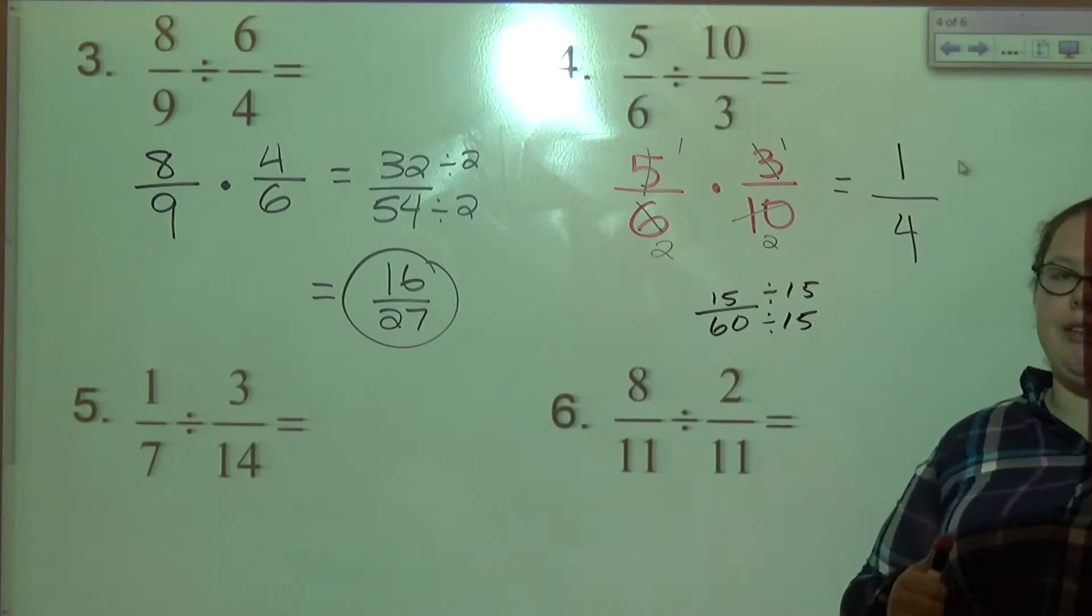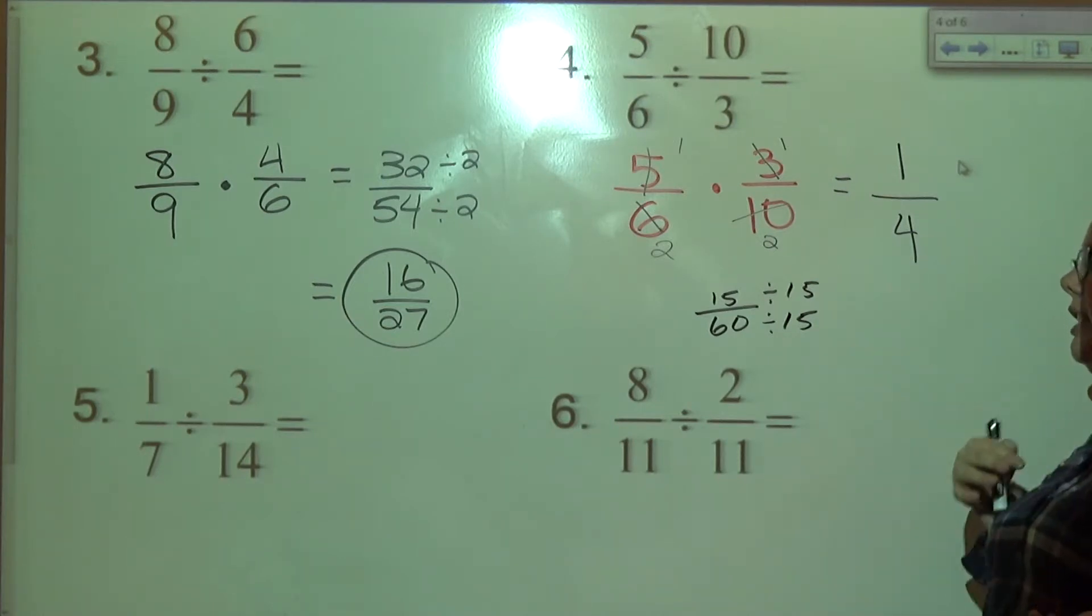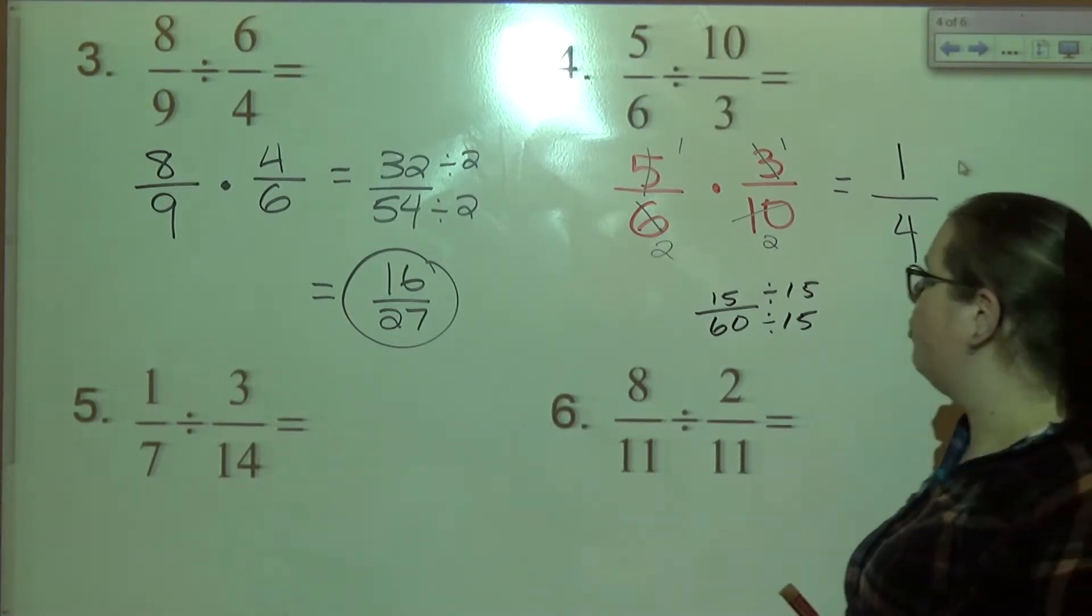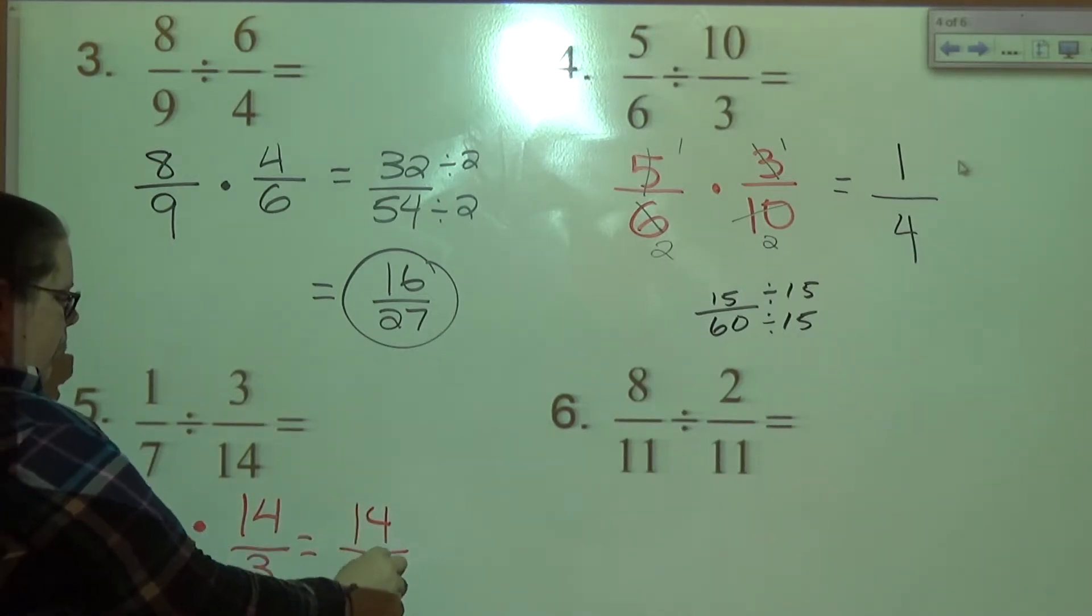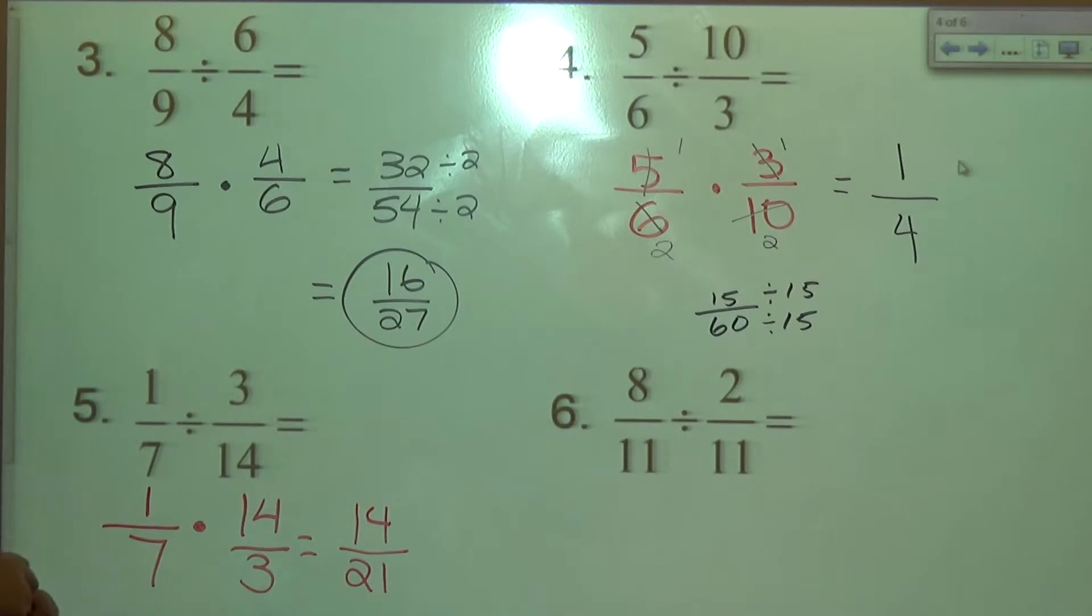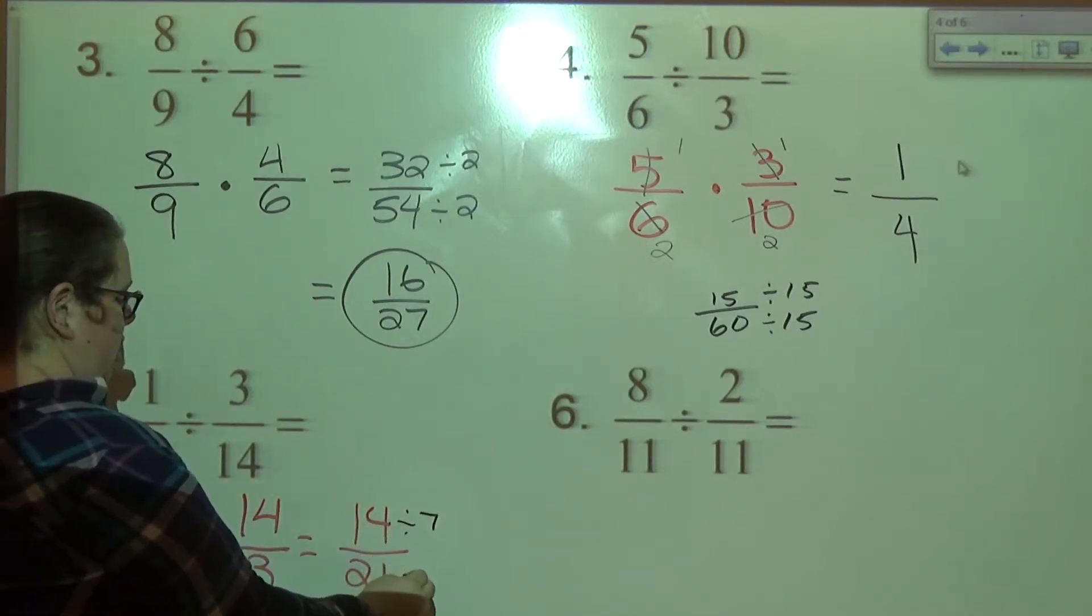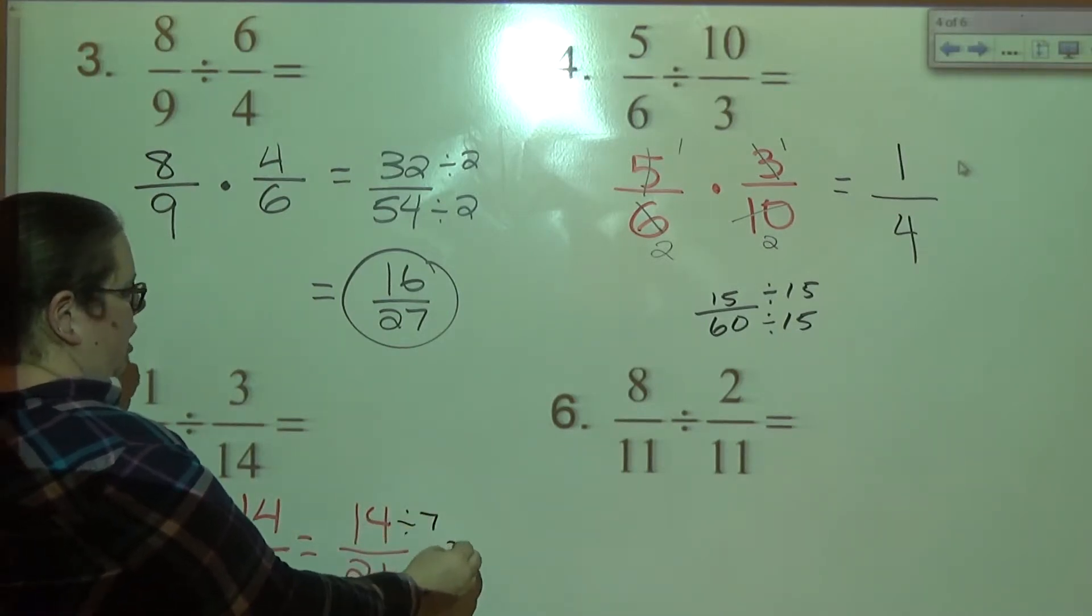Alright. There's your practice. Now pause the video again. If you haven't done five and six, try five and six on your own. So we're going to keep change flip. Keep it the same. Turn it into multiplication and flip your fraction. Multiply my tops together. 14 over 21. I can simplify. What can we divide by? I can divide the top and bottom by seven. And you get two thirds.